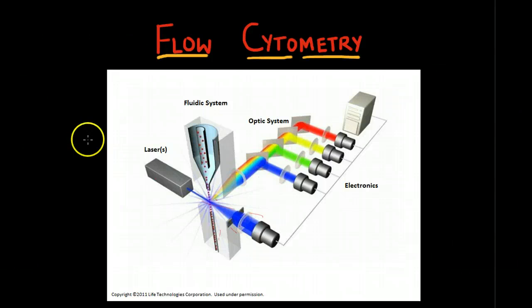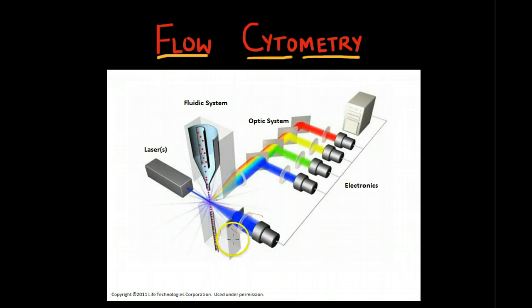Over here we have the fluid cell and the liquid stream. It contains the sheath fluid that helps carry and align our cells so that they pass in a single file through the light beam for sensing.